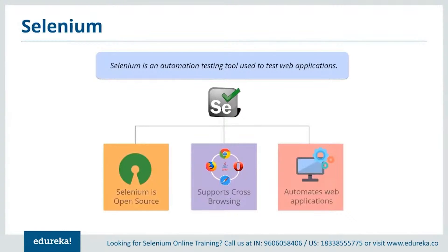Selenium is an open source portable framework used to automate test cases in a web application. It can be run on different browsers like Chrome, Safari, Opera, Explorer, and so on, and supports cross-browsing too. Selenium supports different programming languages like Java, Python, Ruby, C#, etc., with Java being the most commonly used because of its user-friendly behavior.